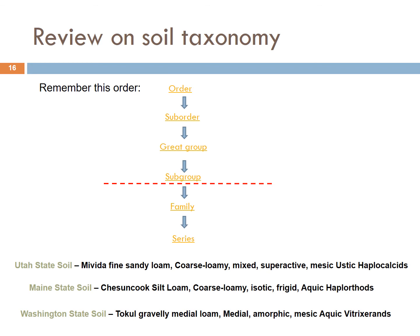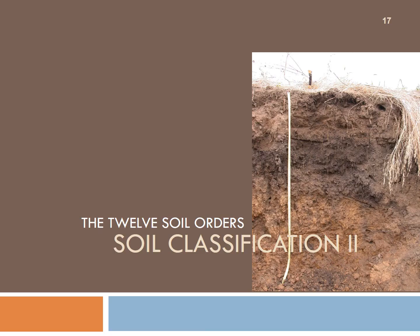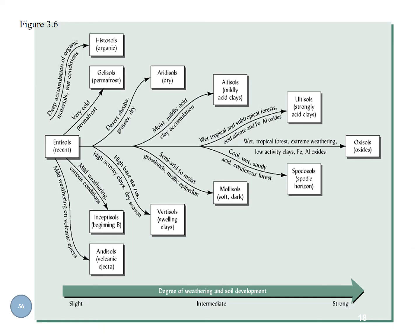What you really need to know in terms of soil taxonomic names is what each chunk of the weird names means. So let's dive into the 12 soil orders. Here's a great graphic from the book that gives you a quick look at all 12.